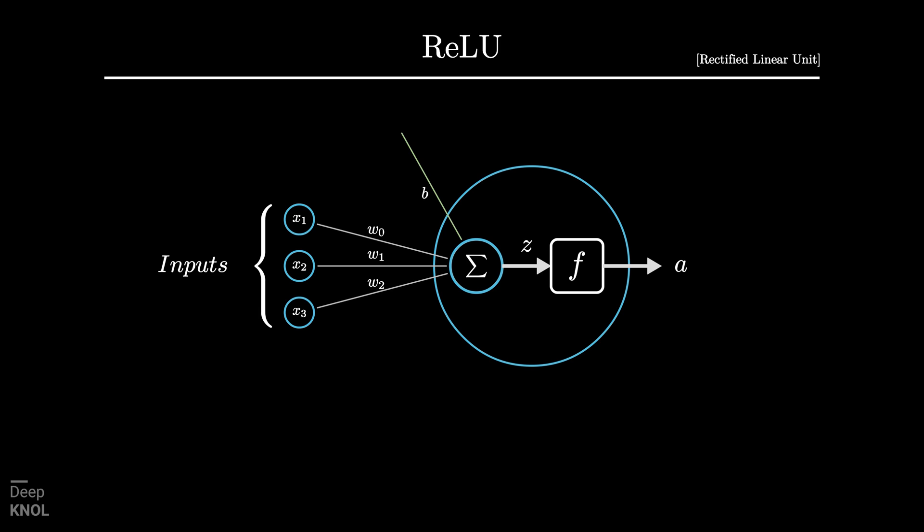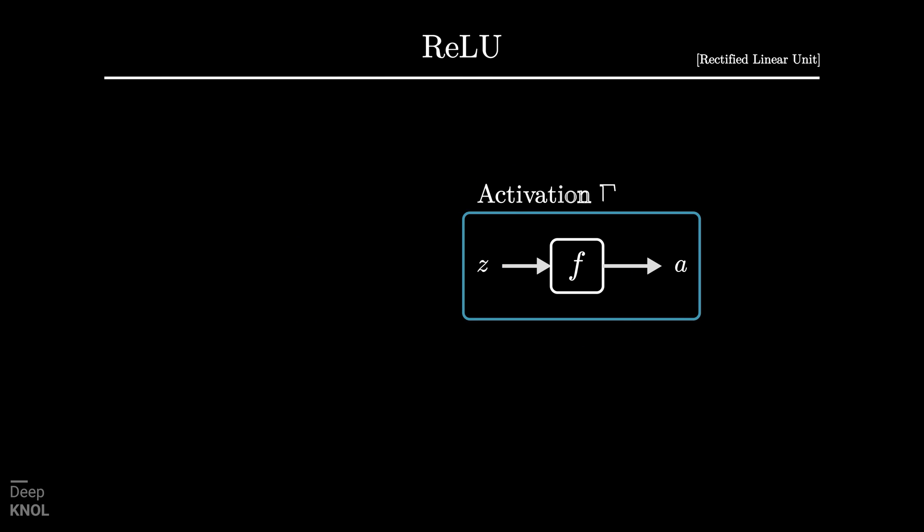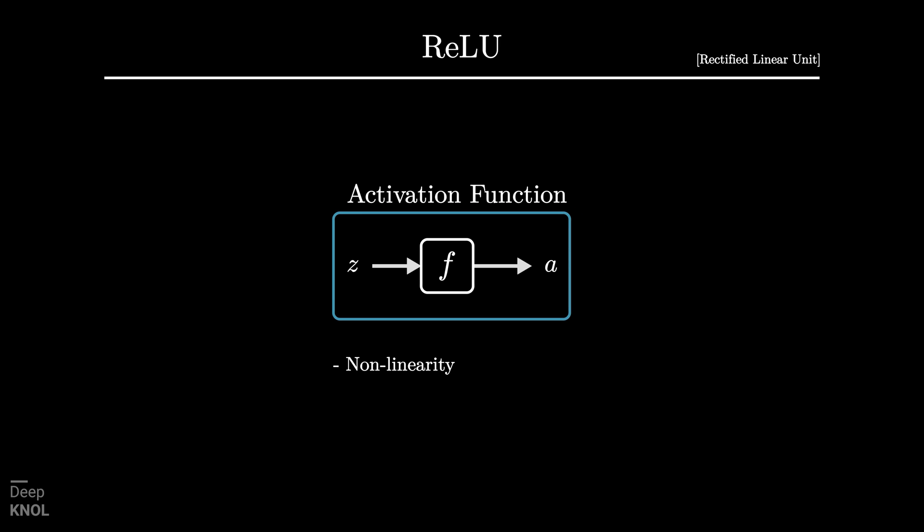So when we talk about activation functions, it just refers to the second operation, the mapping from Z to A. A key requirement from activation function is that it should be non-linear. Its importance will be illustrated later in the video. An activation function also requires its first derivative to be defined at every point. Backpropagation depends upon this property.